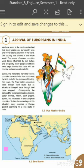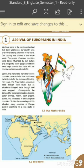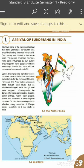Consequently, the demand for Indian commodities like silk, cotton cloth, muslin, black pepper, spices, etc. increased greatly in the European countries. The European countries had very much demand for these goods which they obtained from India. To take advantage of this situation, many European countries started searching for a new route to India.